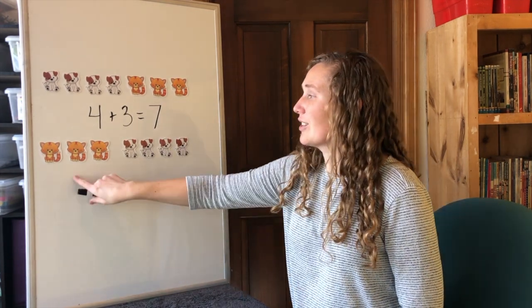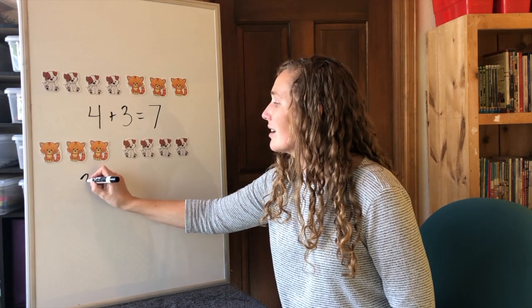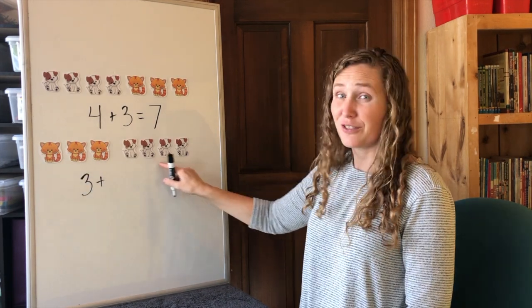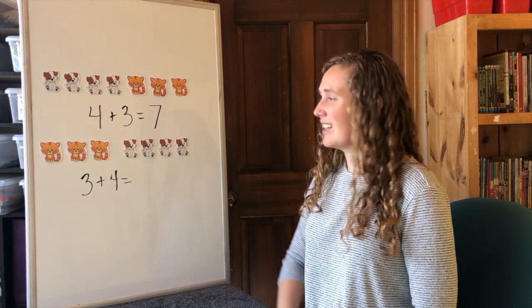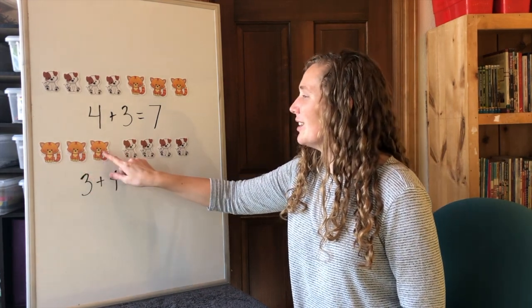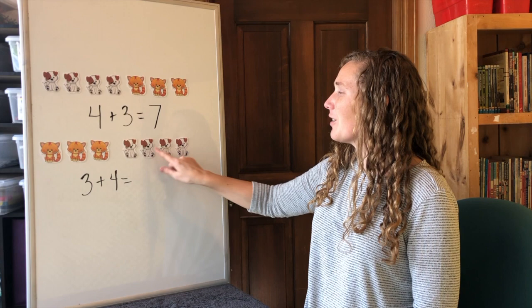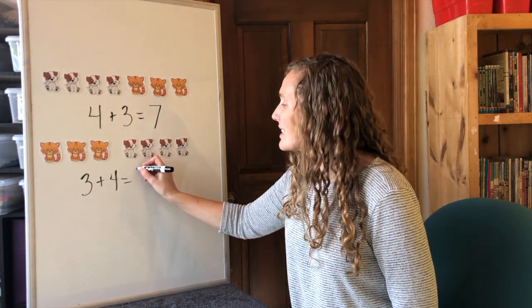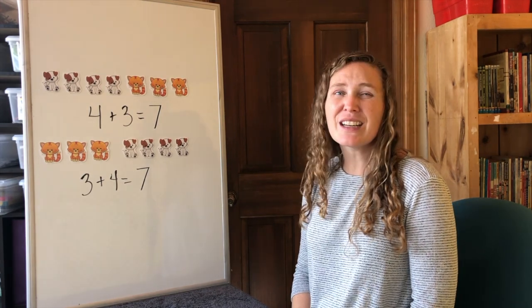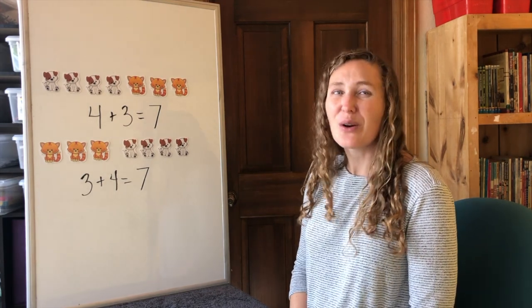Three cats plus four dogs equals one, two, three, four, five, six, seven. Seven, seven pets. The commutative property of addition works again.